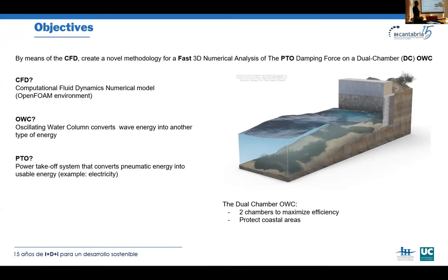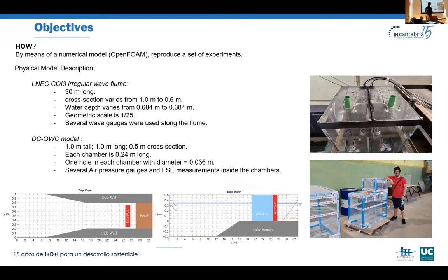It can also protect coastal areas, which is quite important for our work. We are going to reproduce a set of experiments carried out in Portugal at the LNEC laboratory. They have an irregular wave flume which is 30 meters long, with a cross section that can vary between one meter and 0.6 meters, and a water depth varying from 0.684 meters to 0.384 meters. The geometrical scale is 1:25, and we placed several wave gauges along the flume.